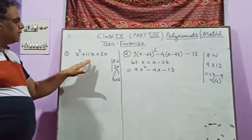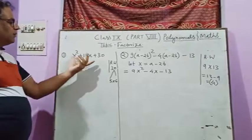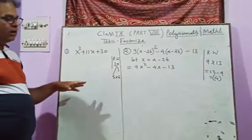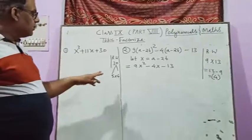First question is x square plus 11x plus 30. So if we observe this question, we have to break 30. If we break 30...